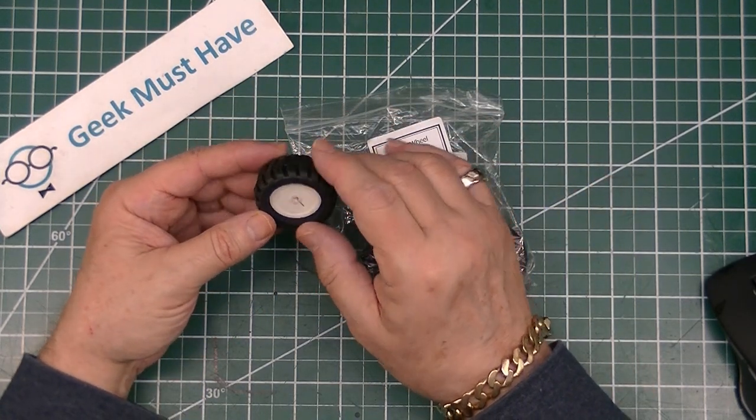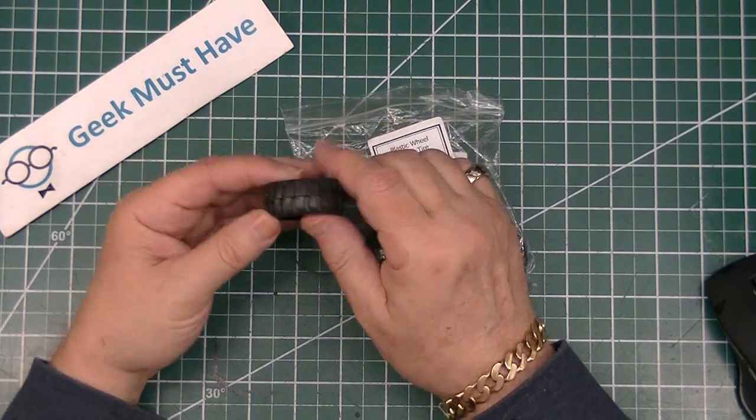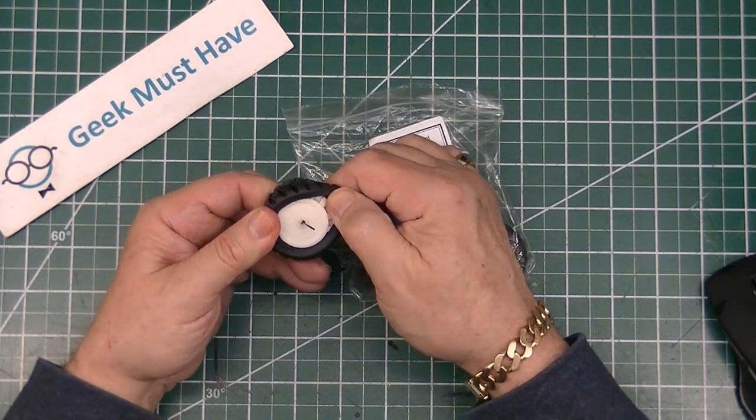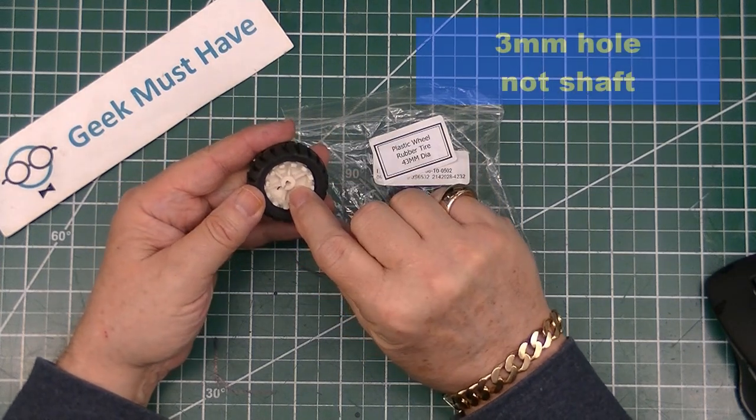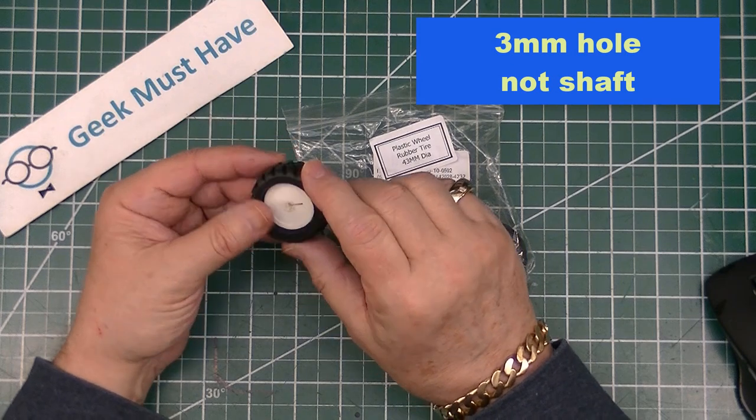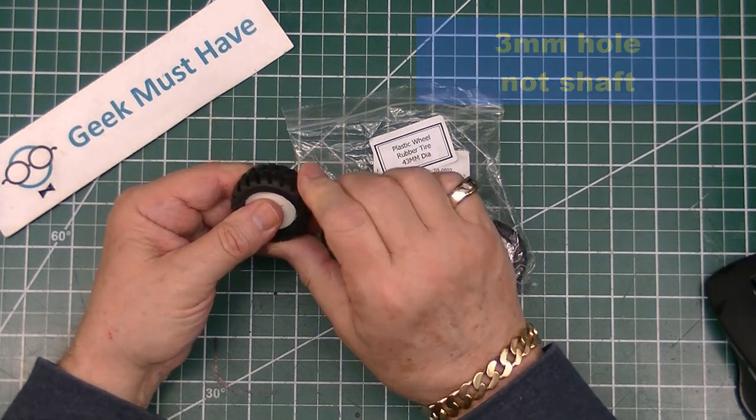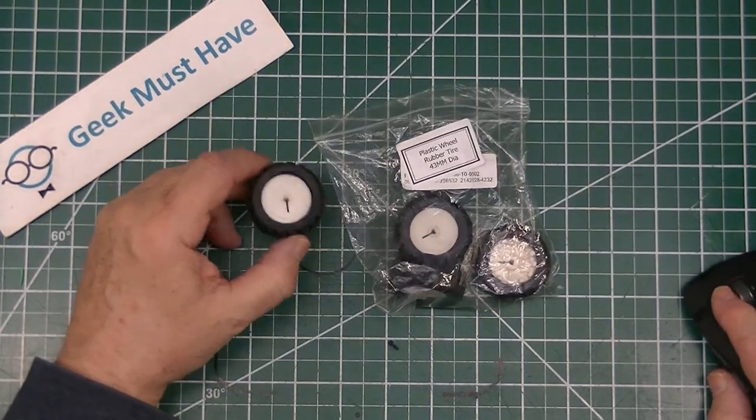The next item is another set of plastic rims with rubber tires, only these are pretty industrial. It has a 3 millimeter shaft. The tires are actually made out of rubber, pretty industrial little ones.